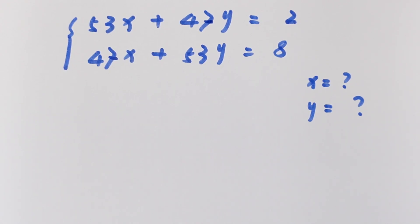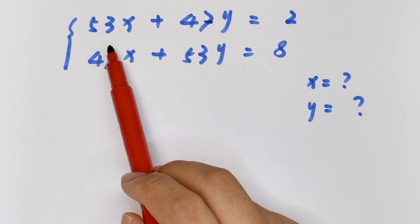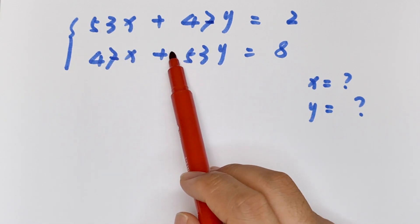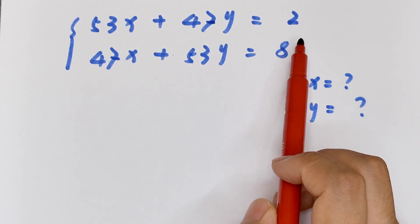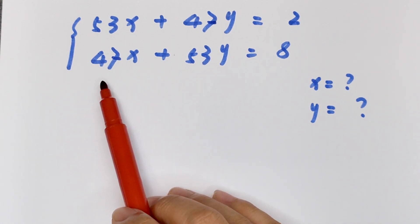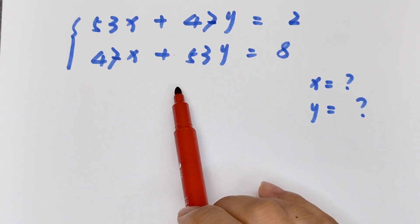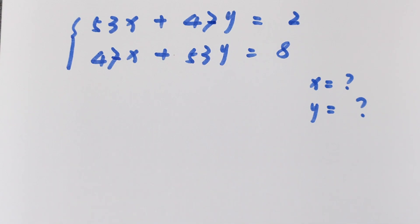Hello everyone, welcome to Math4U. How to solve: 53x plus 47y is equal to 2, and 47x plus 53y is equal to 8. To find the value of x and y.